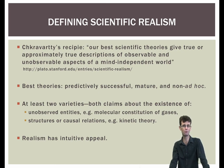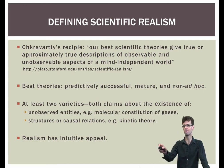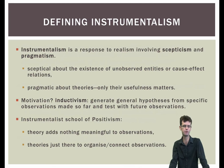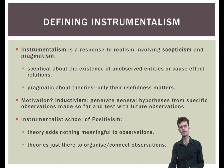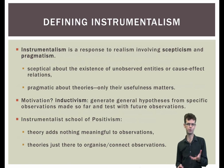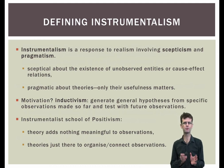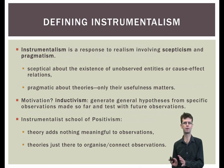Standing opposed to realism is instrumentalism. Instrumentalists tend to make two kinds of claims: skeptical claims on the one hand and pragmatic claims on the other. They are skeptical about claims made by theories about the properties of unobserved entities or about the cause-effect relationships that actually hold out there. And they are pragmatic in recommending that we focus on the usefulness of theories for generating predictions and evaluate them on their ability to do this well.